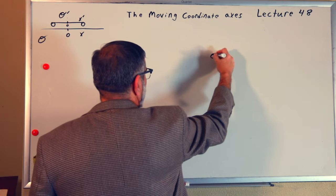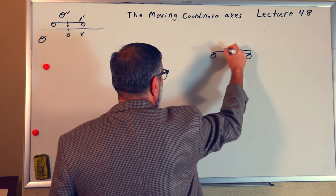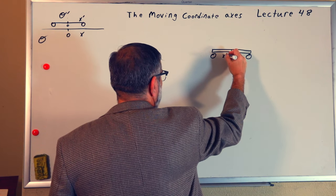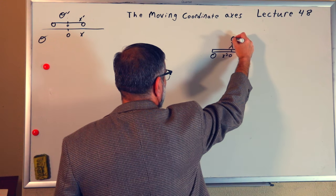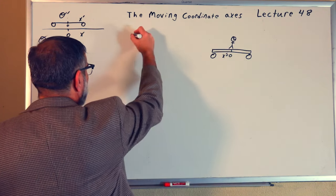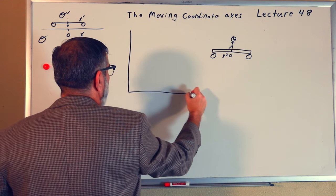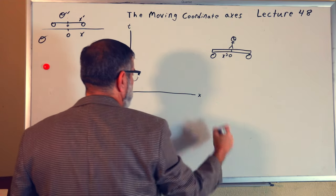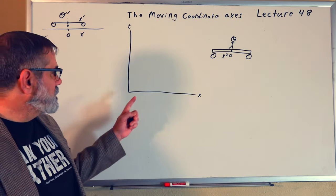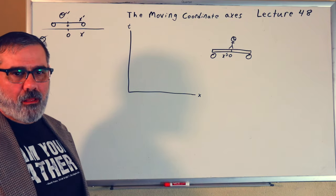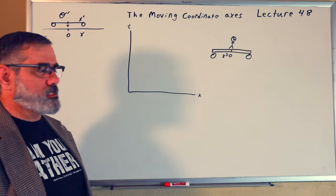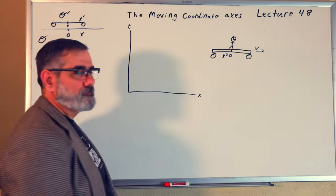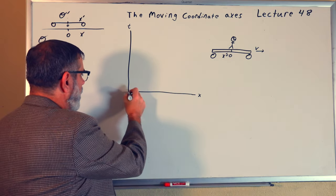We already know this. I'm going to draw another train here. We'll talk about the origin — that's x prime equals zero. We have our observer with his clock standing there. We've talked about the idea that this is the t-axis and this is the x-axis. This is the coordinate system for the platform — it's not moving. But the train is moving relative to us with some velocity v.